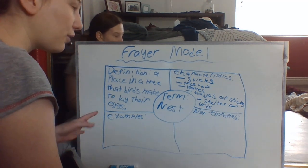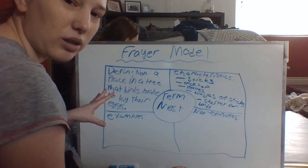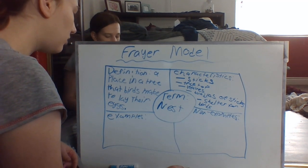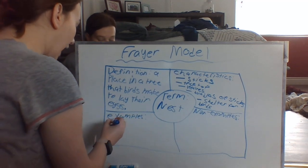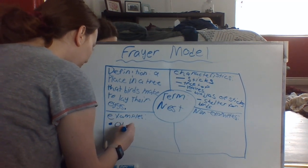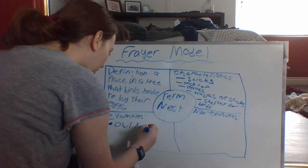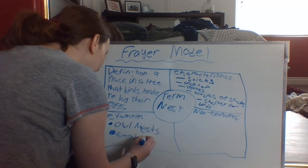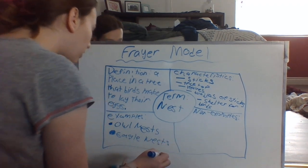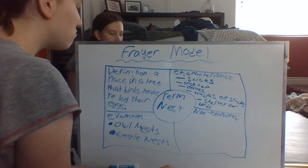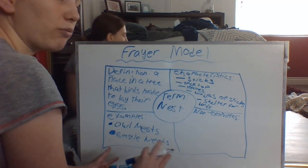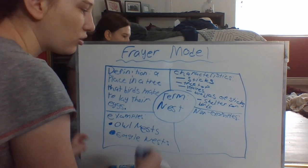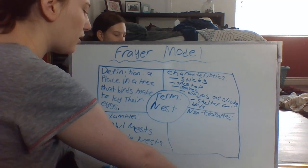For examples of nests: owls live in nests, so owl nests; eagles live in nests, so eagle nests. You can think about where you really see nests — usually with birds, especially birds that fly. For non-examples of nests — what is not a nest — that's probably the easy part.